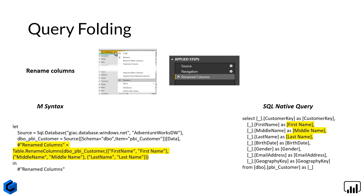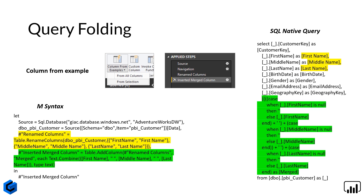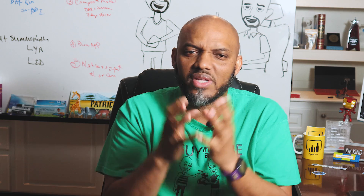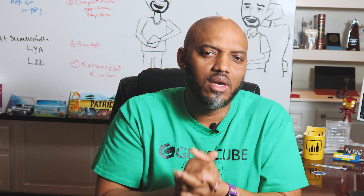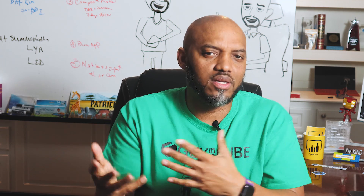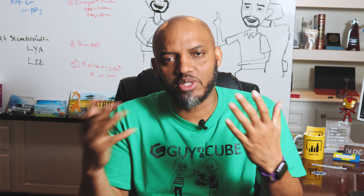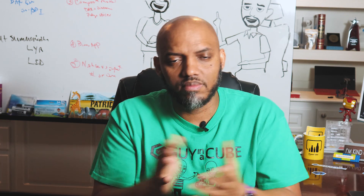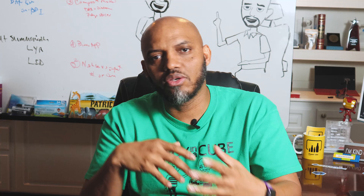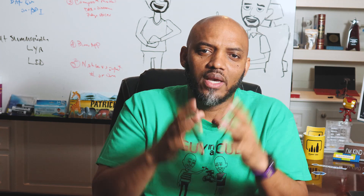So query folding — basically in the query editor, when you import some data and you perform some transformations, the query editor will construct the query and take all that and try to push it, offload it to the source as much as it possibly can. But only certain transformations are supported by certain sources. Take SQL Server, for example. If I'm trying to do like capitalize every letter, that is something that won't fold back. But if I wanted to do something like absolute value, it can fold back.